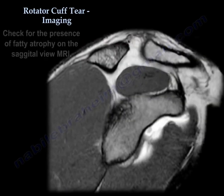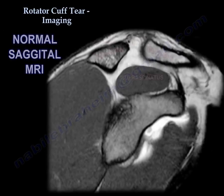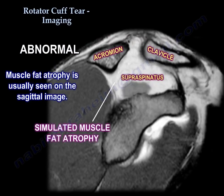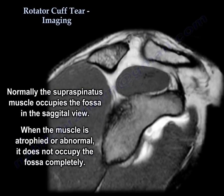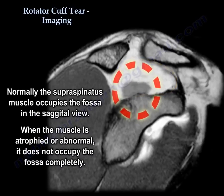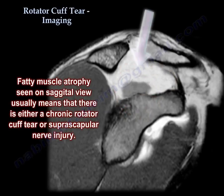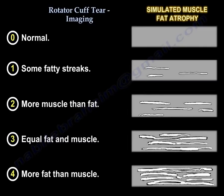You want to know the quality of the muscle. The sagittal view is the best view to assess fatty atrophy. Normally, the supraspinatus muscle occupies the fossa in the sagittal view; when the muscle is atrophied or abnormal, it does not fill the fossa completely. Fatty muscle atrophy on sagittal view indicates either a chronic rotator cuff tear or suprascapular nerve injury. The staging is: 0 = normal; 1 = some fatty streaks; stage 2 = more muscle than fat; stage 3 = equal fat and muscle; stage 4 = more fat than muscle.